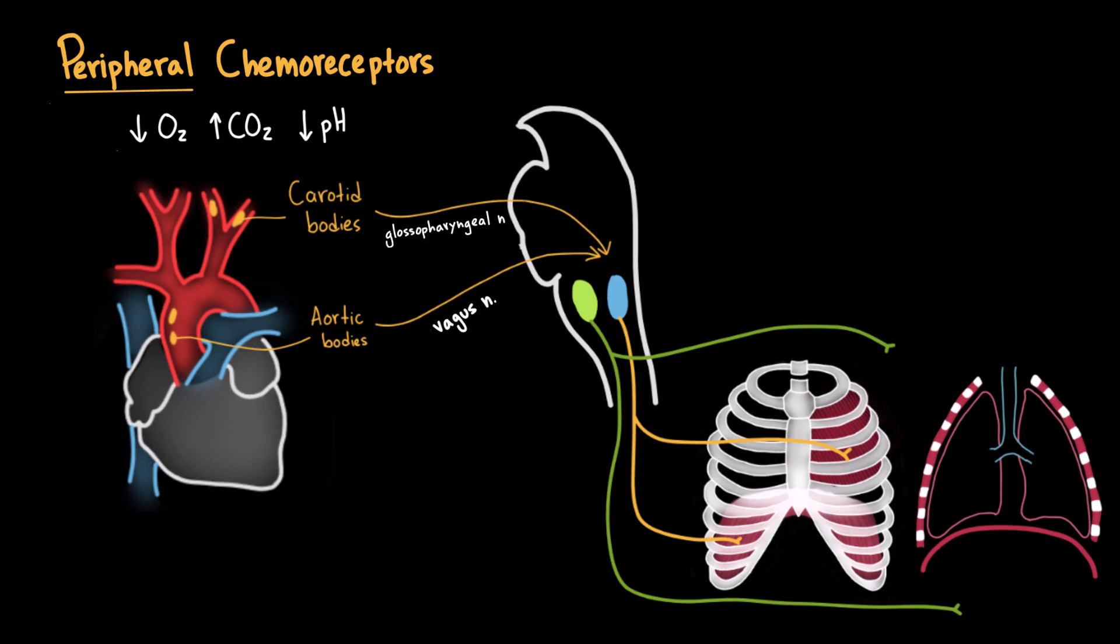Here, breathing works through a negative feedback loop. Imagine your CO2 levels rise, like after holding your breath for some time. The chemoreceptors detect CO2 elevation and send signals to the respiratory centers, stimulating them to increase the ventilation rate. This causes you to breathe faster to eliminate that extra CO2.